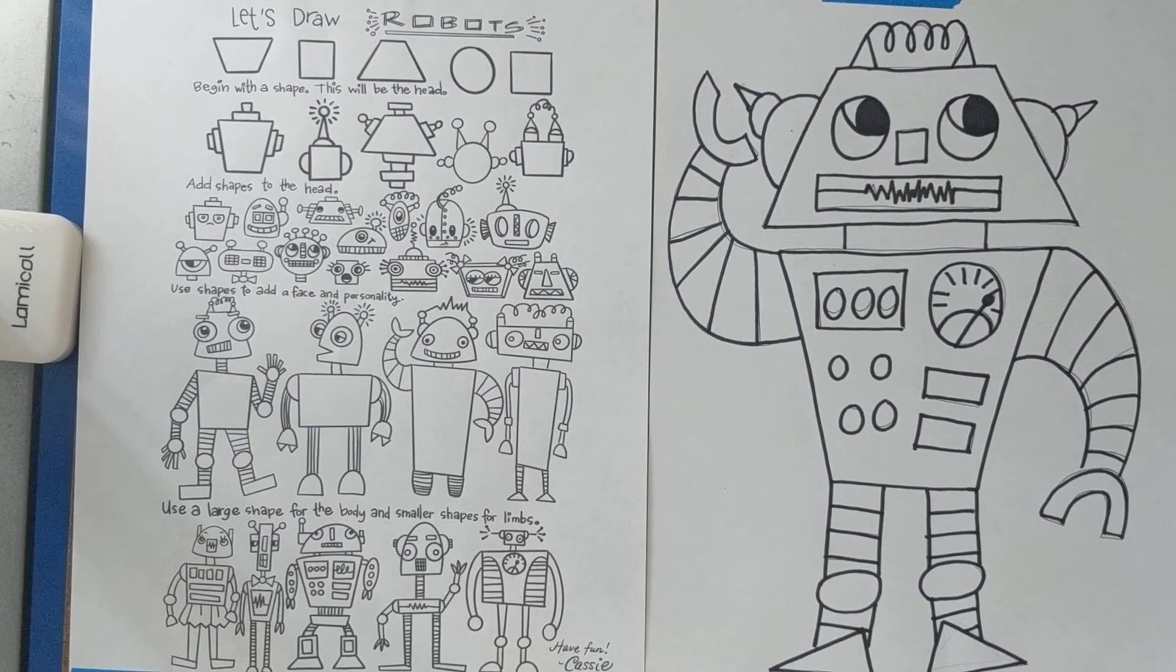Now all that's left to do is to erase all those extra pencil lines and maybe add some color. So once you're done with all this, please send me a photo on either Dojo, Google Classroom, or you can just email it to me. I'm really excited to see what you guys come up with. I'll see you later.